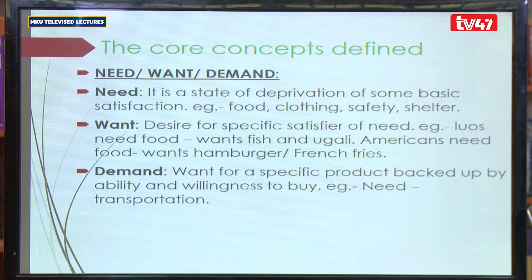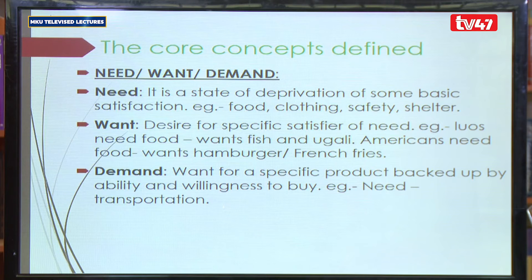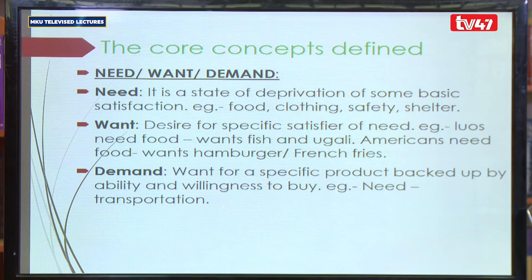Wants are specific satisfiers of specific needs. For example, if you are hungry and need food, the want is the type of food you want at that particular time — some will go for beans and ugali, others for chapati and beef, others for chips and fish, others for french fries and burgers. Those specific satisfiers are what we call wants.